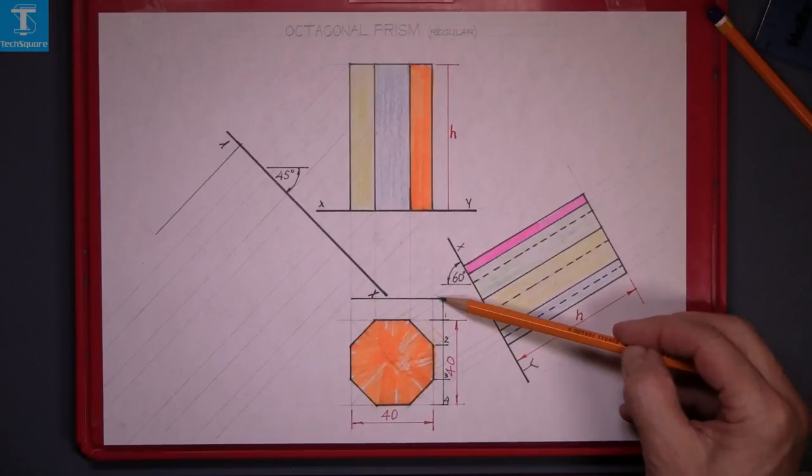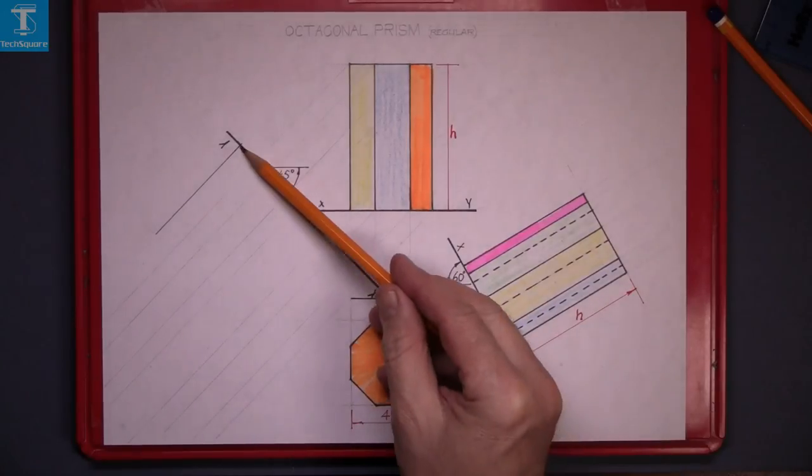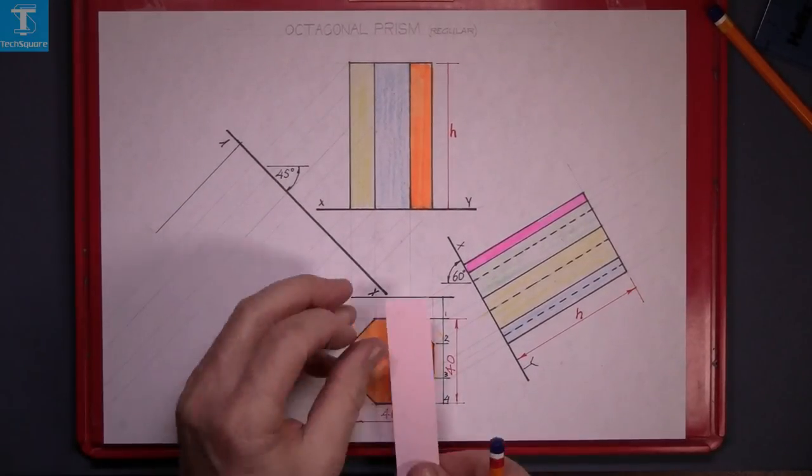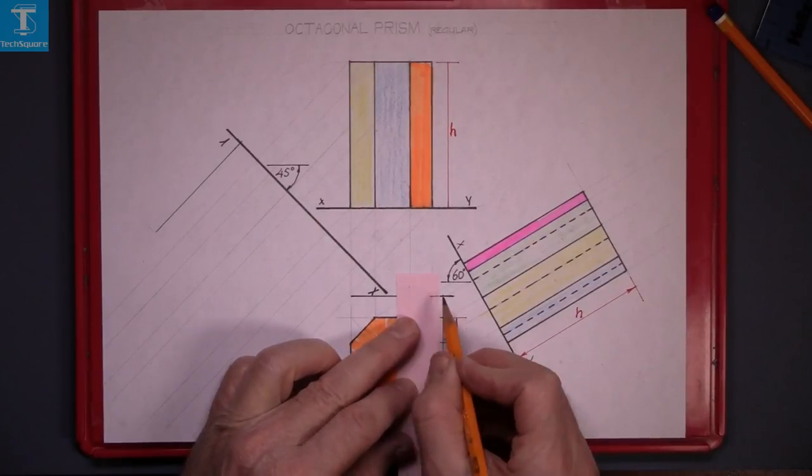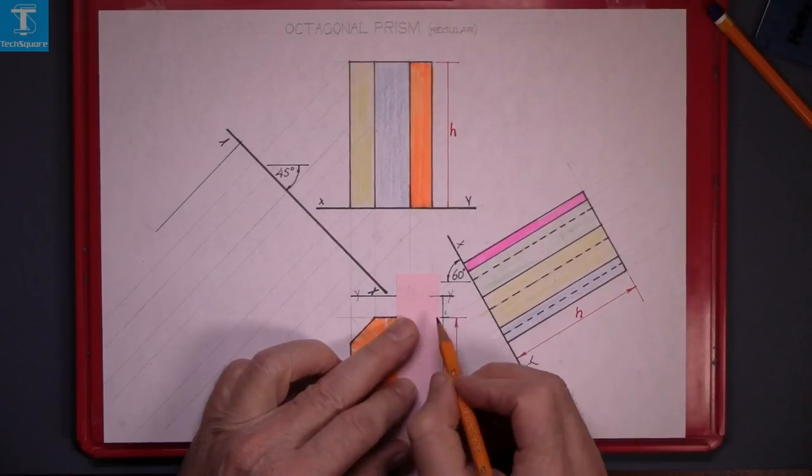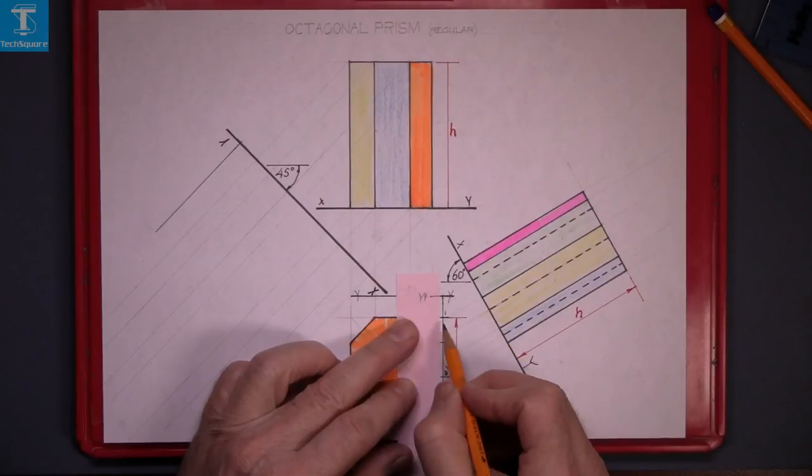So what we've done is we've introduced a new line here. And we'll take the distances from the new line, like that, and mark them on this line up here. So with the slip of paper, mark these points. Now we'll just call that a YY line for the moment.